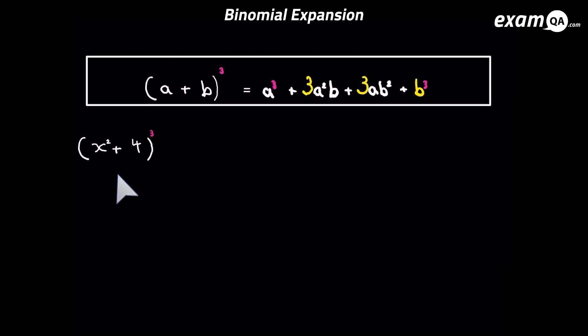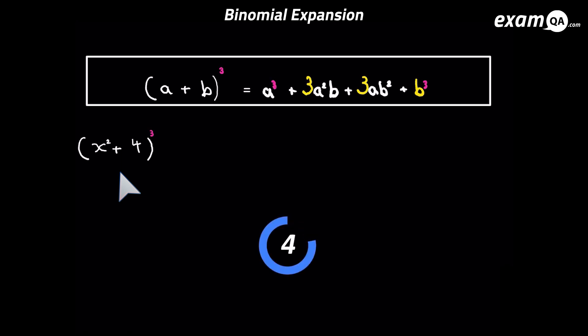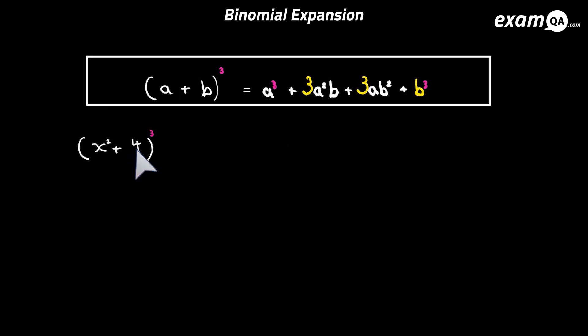So we're going to try binomial expansion again, and this time our bracket is to the power of 3, so it's a little bit simpler. The coefficients we need from Pascal's triangle are 1, 3, 3, 1. In this example, we're going to try doing ascending powers of x — that means we want the lowest power of x first, and x's power should increase as the expansion goes on. So we should let a be 4 and b be x squared.